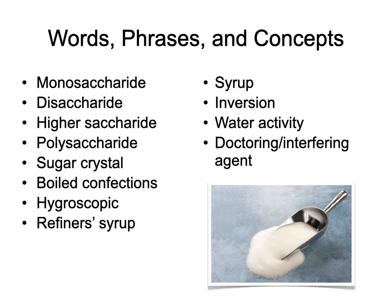We're going to break down sugar into its individual parts and take a look at what sugars are. Words like monosaccharide, disaccharide, higher saccharide, and polysaccharide are all scientific terms for different types of sugars. We're looking at the crystalline structure of sugar, things called boiled confections, and the fact that sugar is a hygroscopic substance — which means it attracts water. We'll also look into syrups and inversion of sugar, which has an important function in baking and pastry.